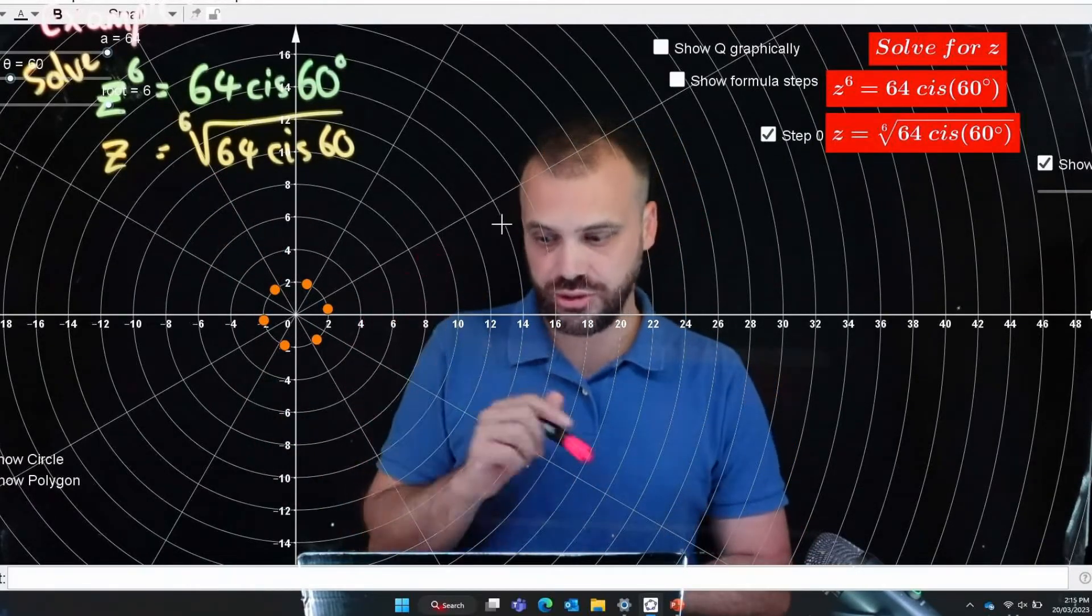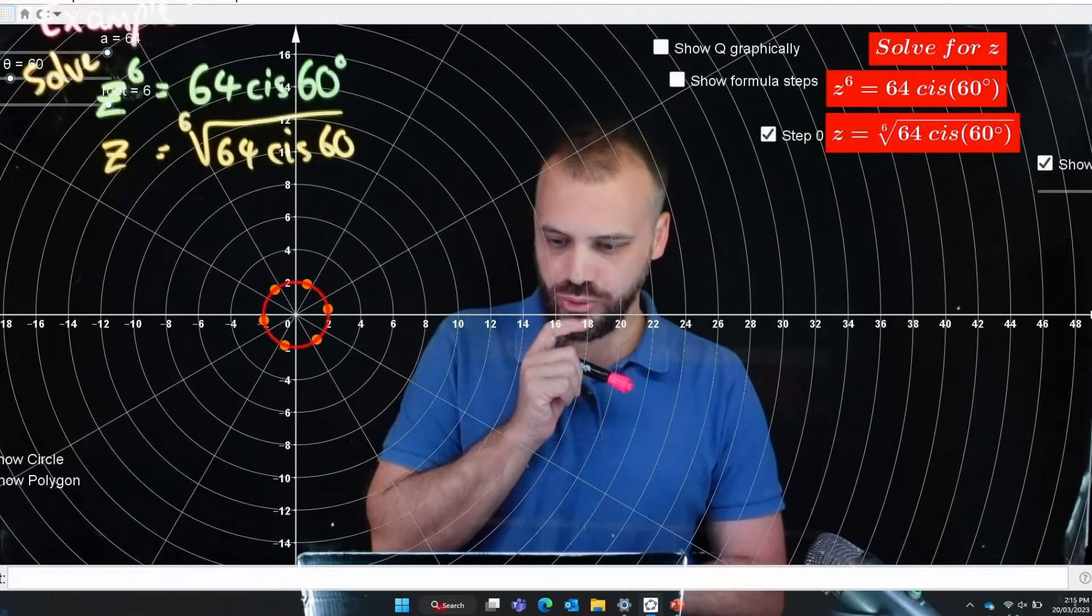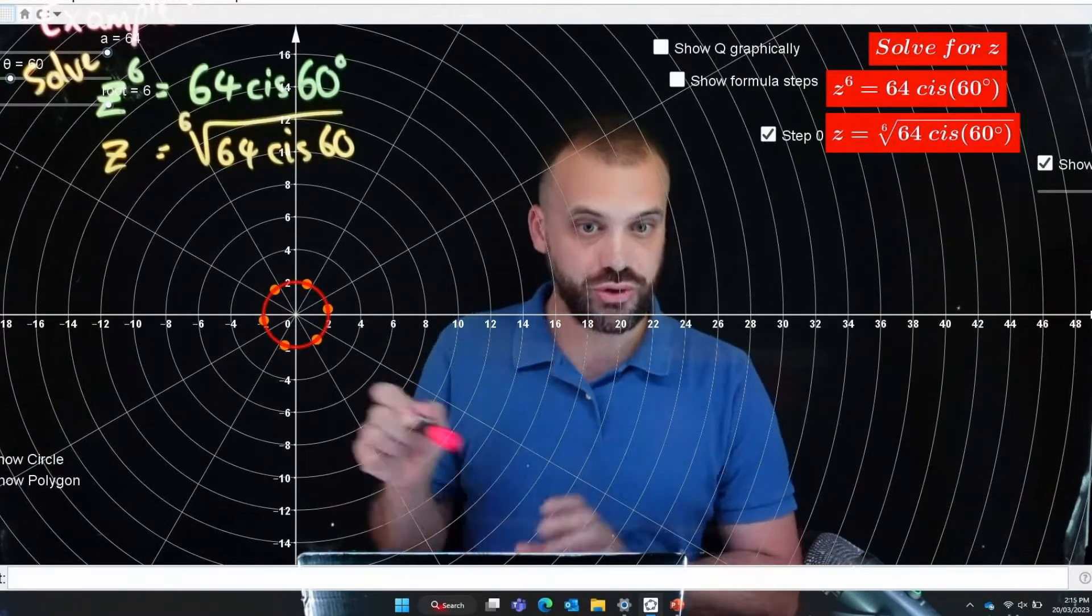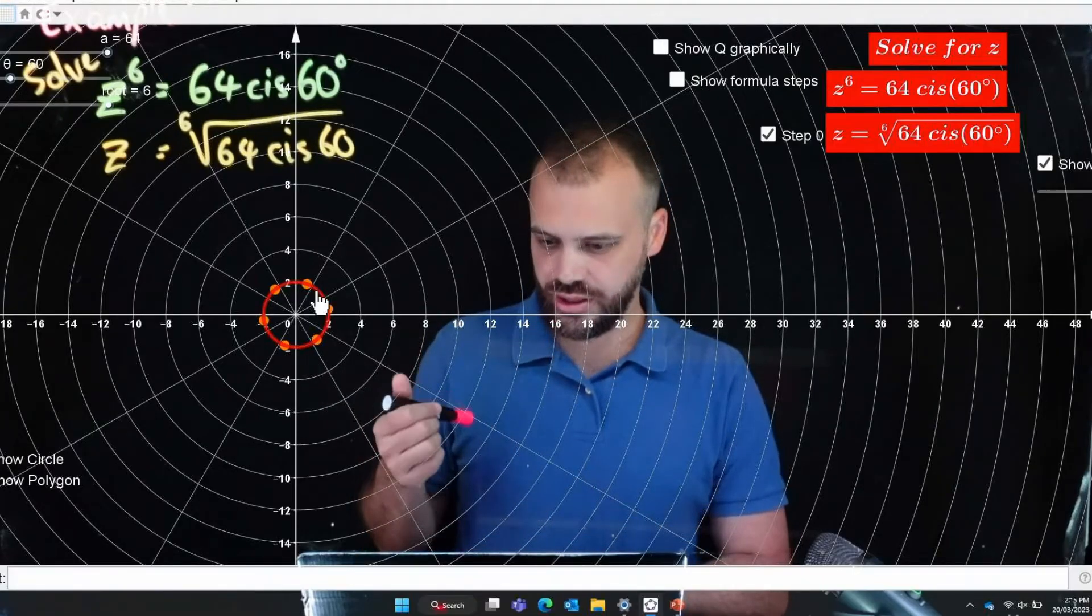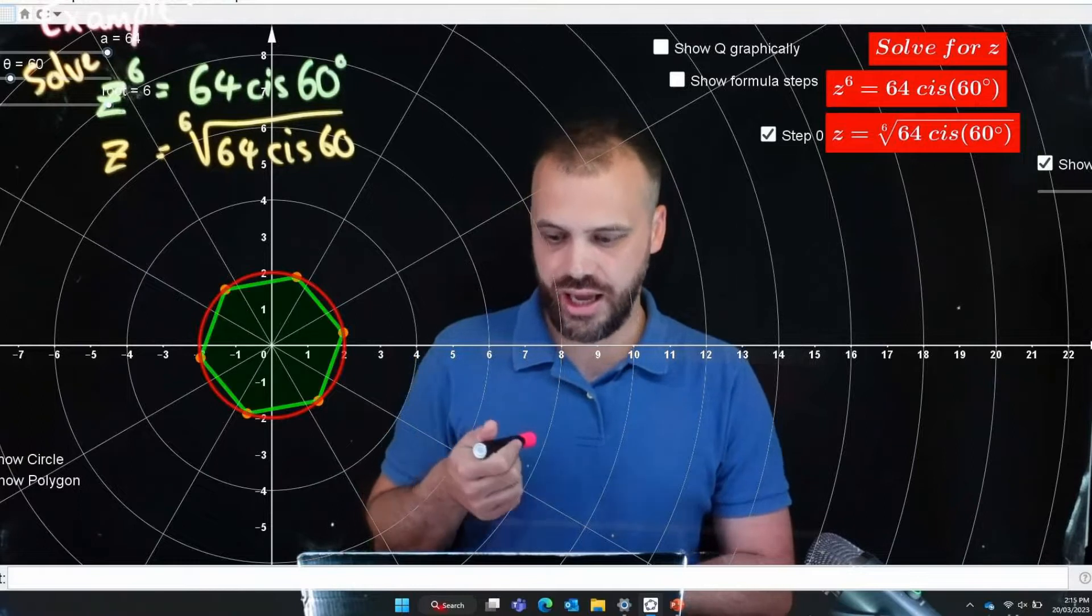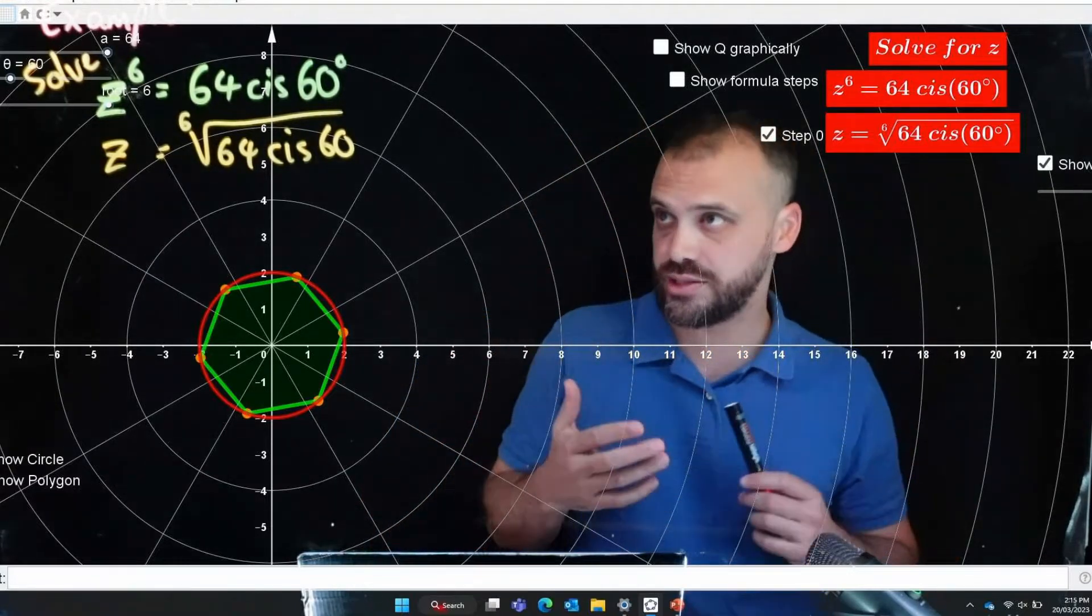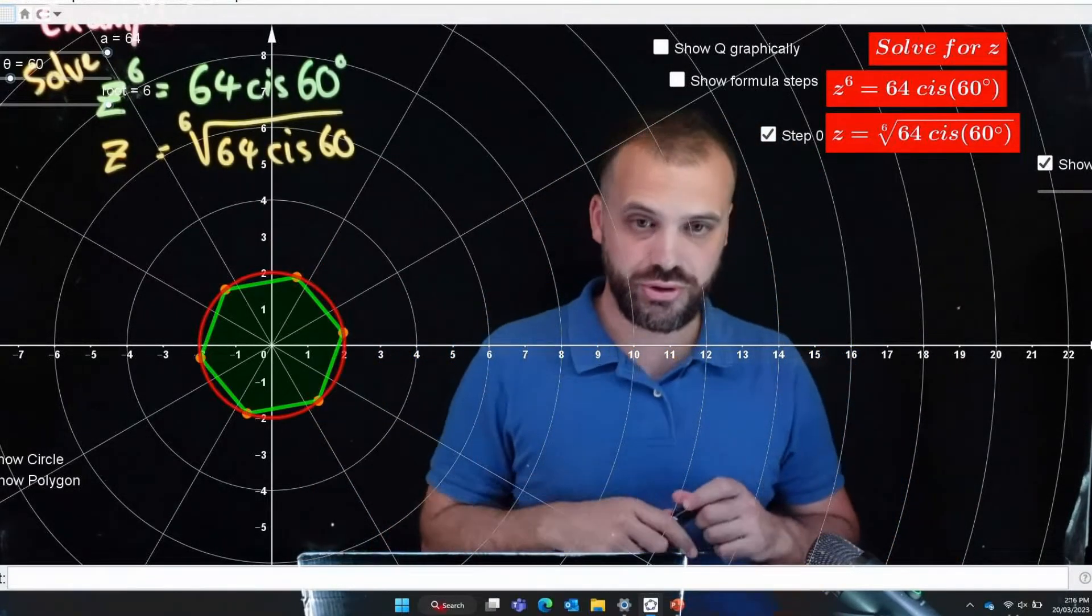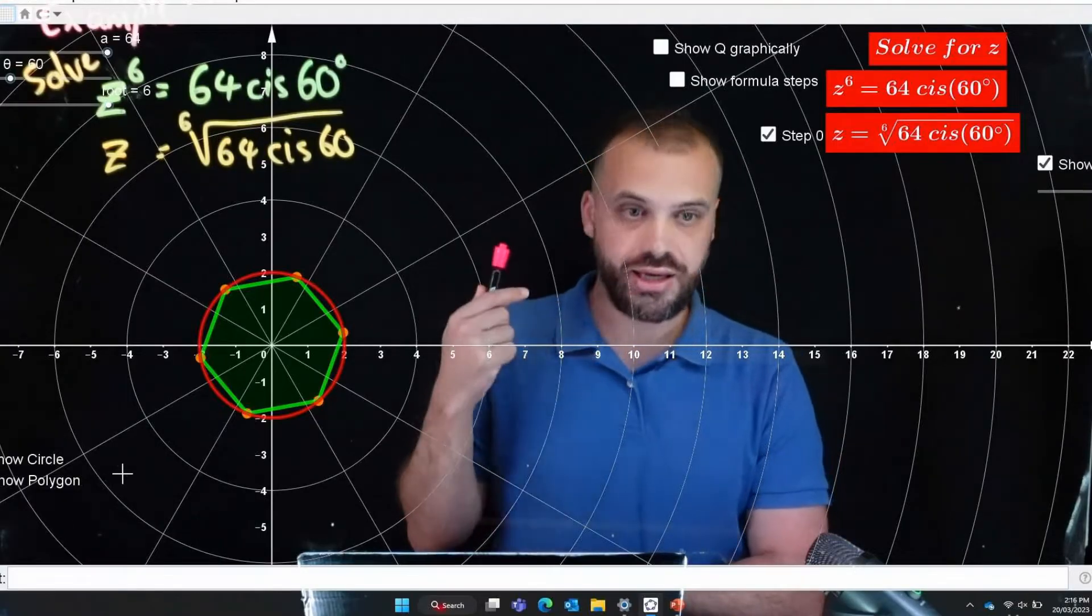Now these six solutions importantly all lay on a circle around the origin and if we do a little bit of a zoom in here it creates a polygon. In this case because we're finding the sixth root it's going to create a hexagon.